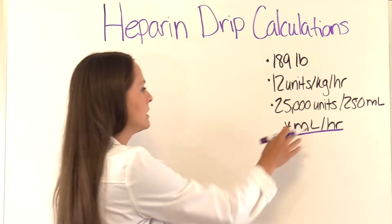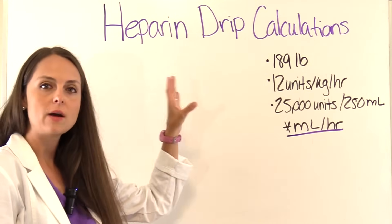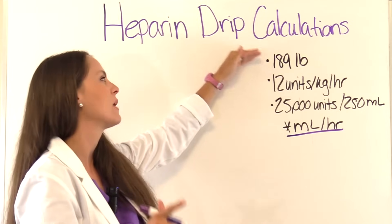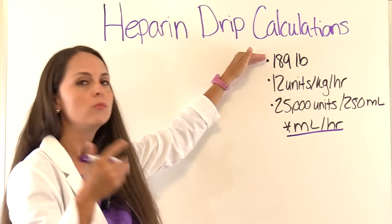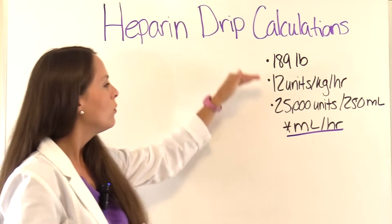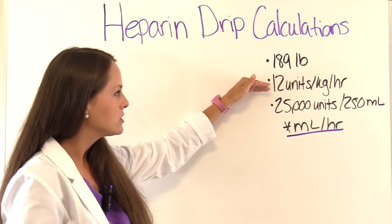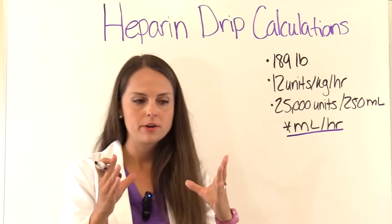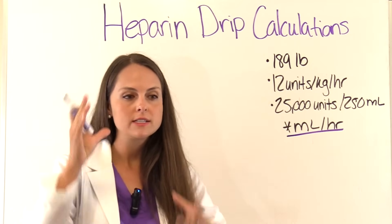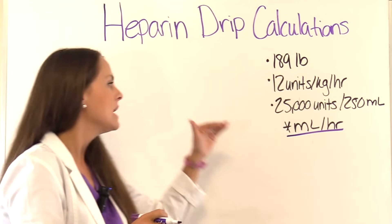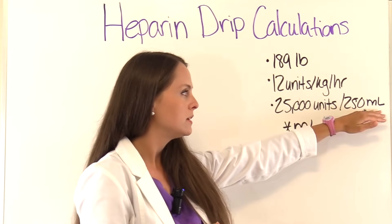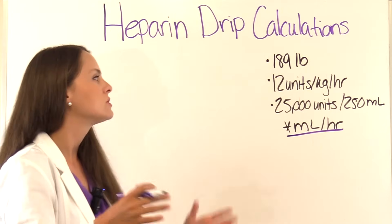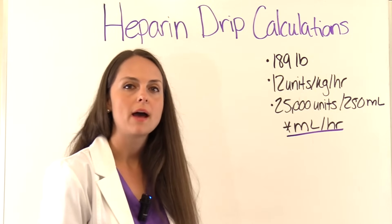We're trying to get milliliters per hour. Some important information from our problem: the patient's weight. Heparin is weight-based, so you always want to know a patient's weight. They weigh 189 pounds, and we need it in kilograms, so we'll be converting that. We also know the patient needs to be started at 12 units per kilogram per hour, and we have a heparin bag on hand. Every bag of heparin varies in size, so always read it — this one says 25,000 units per 250 mls.